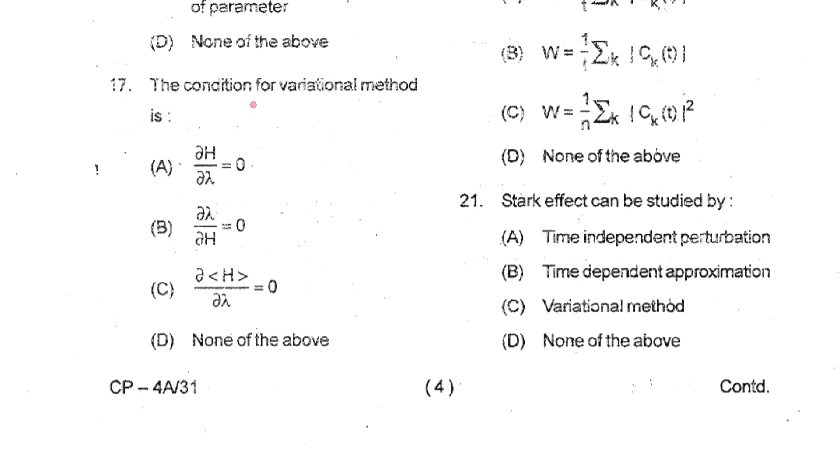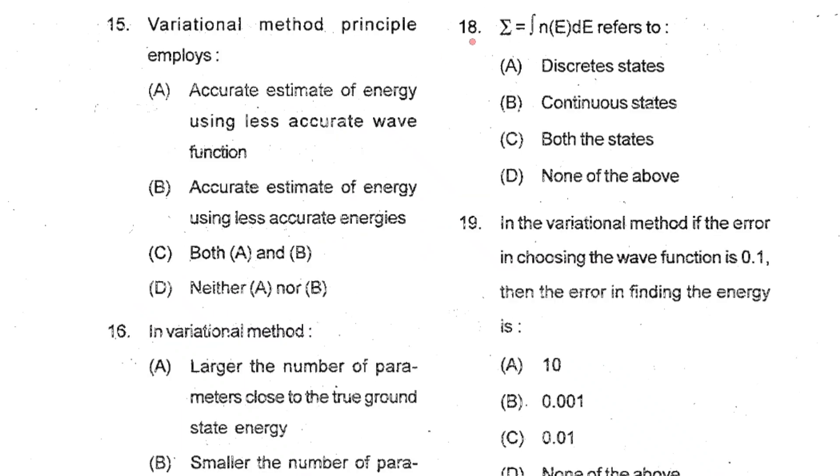Question number 17: The condition for variational method is, we consider a wave function depending on different parameters, then we define the expectation value of the Hamiltonian or the energy, then we minimize the energy. So that is dH/dλ equals to zero. This is the condition for the variational method. So C is your correct option. Question number 18: This expression refers to continuous state. So B is your correct option.